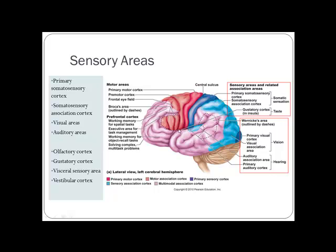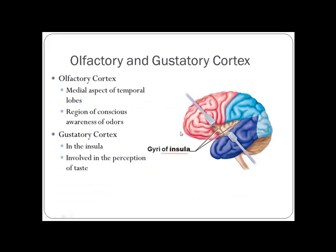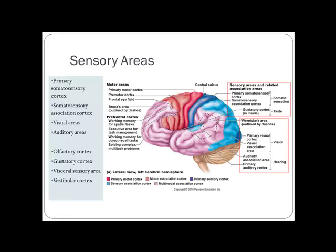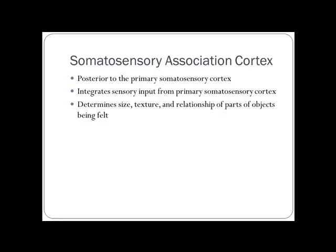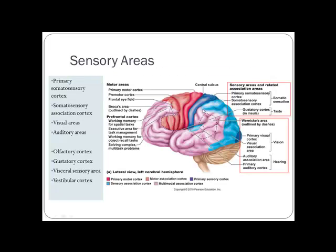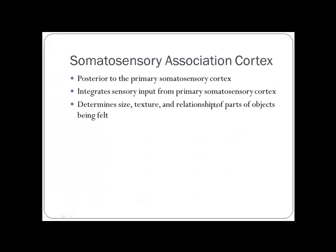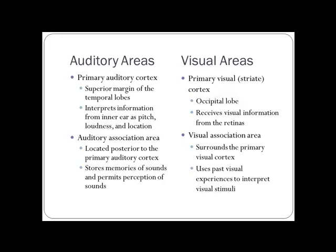The gustatory cortex is inside the insula, which you can see if you pull apart the lateral sulcus — it's deep and inferior to it. The somatosensory association cortex is posterior to the primary somatosensory cortex; it integrates sensory input to help you determine size, texture, shape, and relationships of things you're feeling — like the smooth, slightly textured, cool surface of a desk.